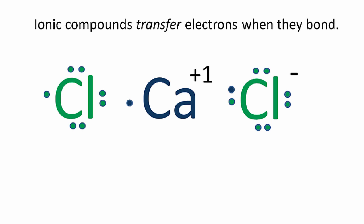It's negative. The calcium then transfers the other valence electron to the chlorine, it now has a negative on the chlorine, and the calcium has a plus 2 charge.